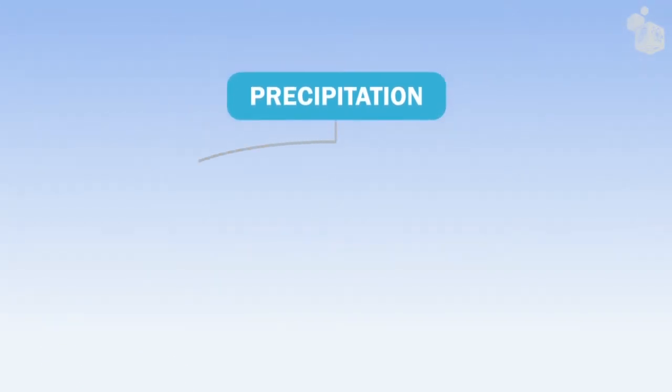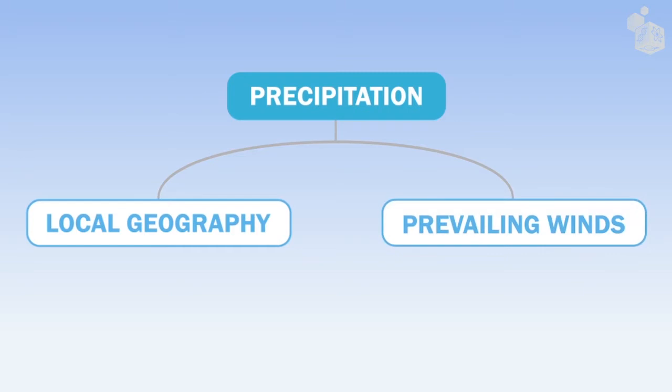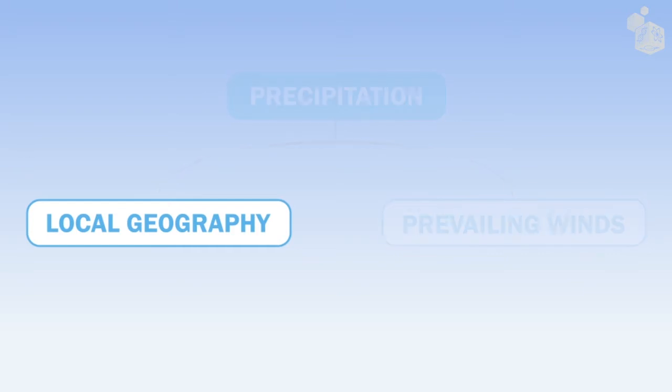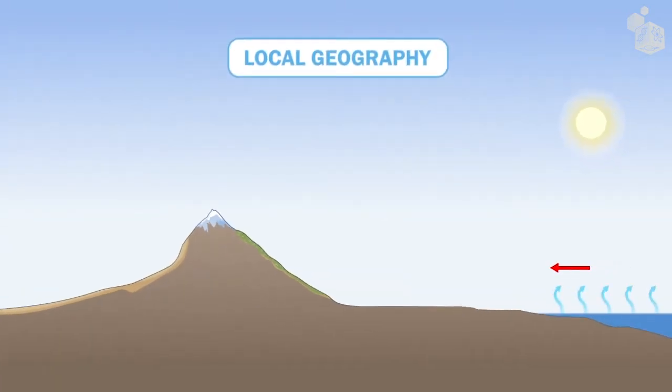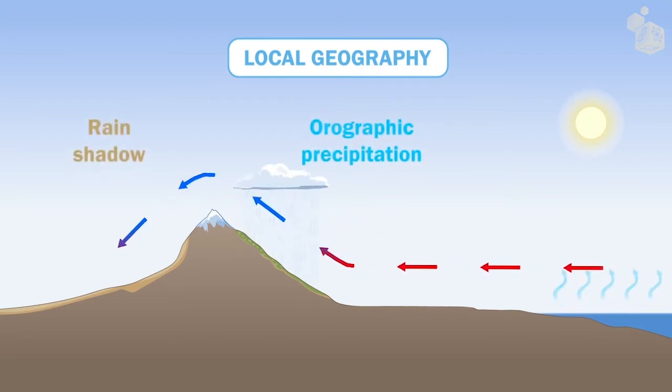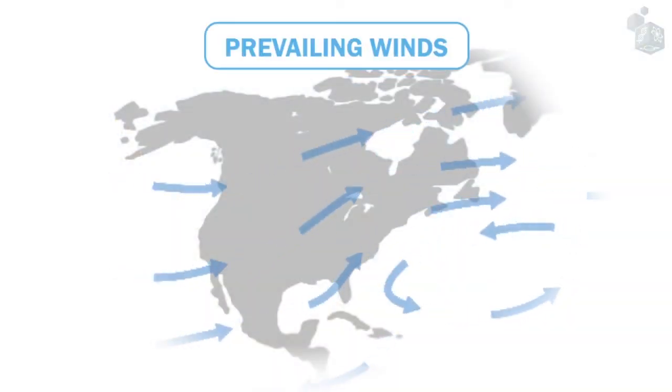The precipitation pattern of a region mainly depends on its local geography and prevailing winds. The local geography determines the orographic precipitation, or the rain shadow, that occurs in a region. Prevailing winds are typical winds that blow in a region and they affect the precipitation pattern.